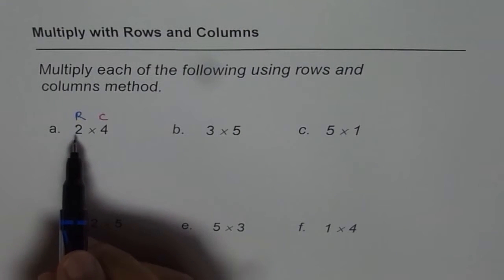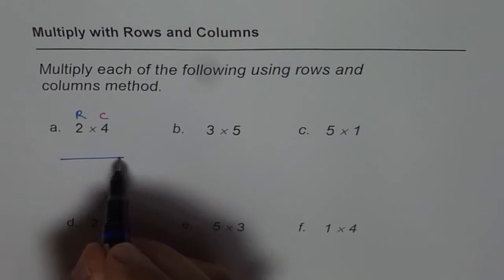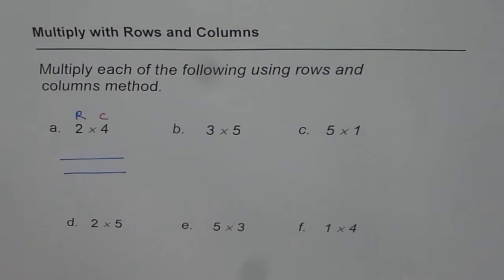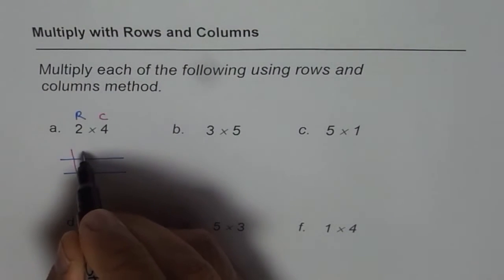Rows are horizontal, 2 times 4, 2 rows times 4 columns. So we can draw 2 horizontal lines, that is 2 rows and 4 columns means 4 vertical lines.